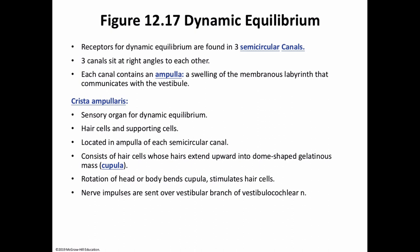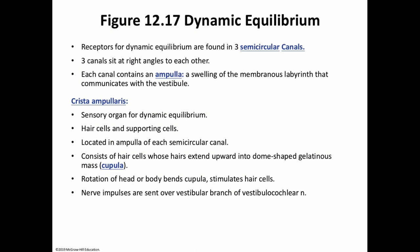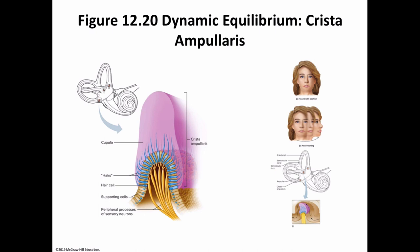Movements in different directions affect different combinations of semicircular canals. The brain interprets those impulses as different movements. When your head is still and then moves, there is a small lag in the fluid. Parts of the cerebellum are particularly important in interpreting impulses from the semicircular canals, allowing the brain to predict the consequences of rapid body movements and modify signals to skeletal muscles to maintain proper balance.